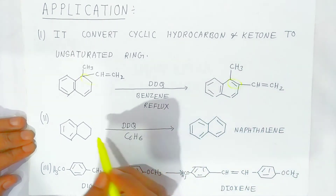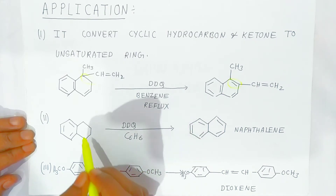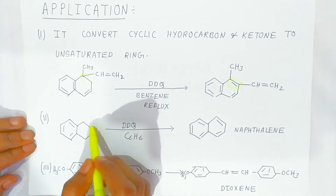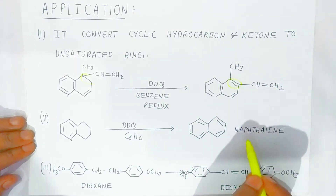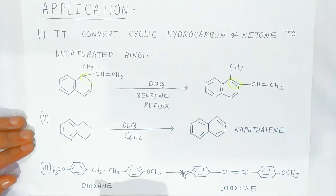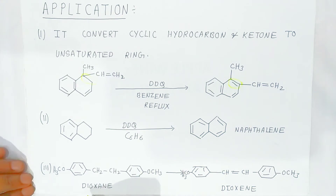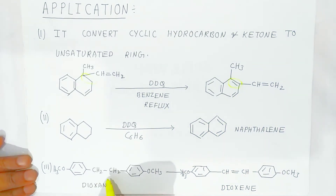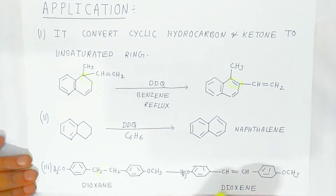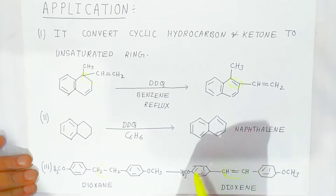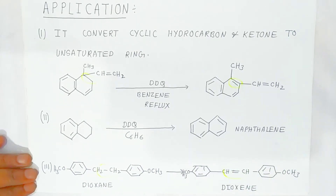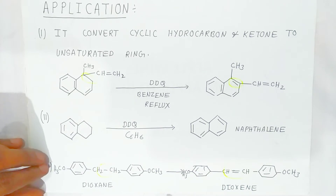Dehydrogenation takes place — the hydrogen present is eliminated and converted into naphthalene. Also, if you have dioxane, here too hydrogen is eliminated and there is formation of a double-bonded compound. These are the very important applications of DDQ.